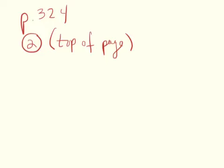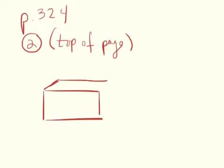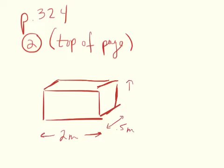Number two: a 2.8 kilogram rectangular air mattress is two meters long, a half a meter wide, and a tenth of a meter thick. We've got this rectangular air mattress, so we want to draw a rectangular prism to start. It's two meters long, half a meter wide, and a tenth of a meter thick — not drawn to scale obviously.